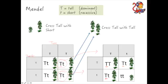And because you've now got two lowercase, you'll get a short plant. So that's why he ended up with three quarters of the offspring being tall and one quarter being short, in the ratio of three to one tall to short, or 75 percent tall.